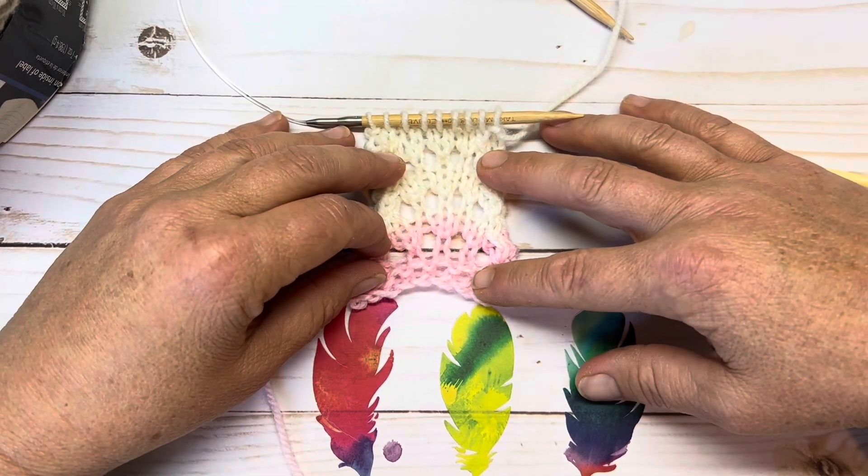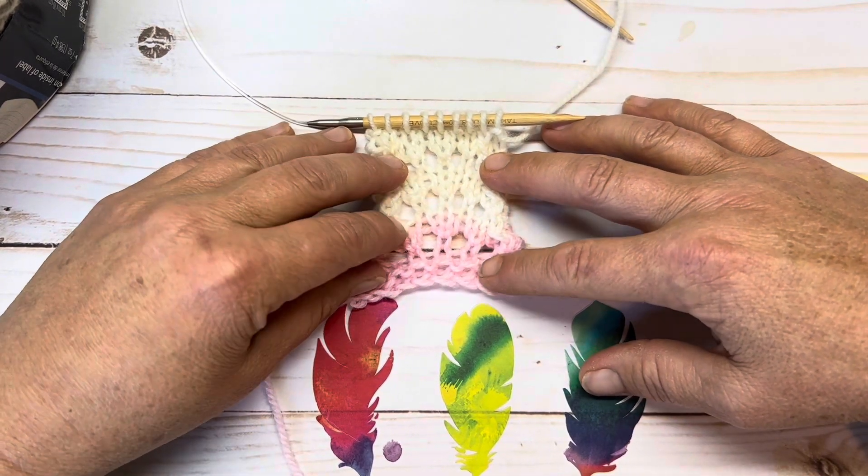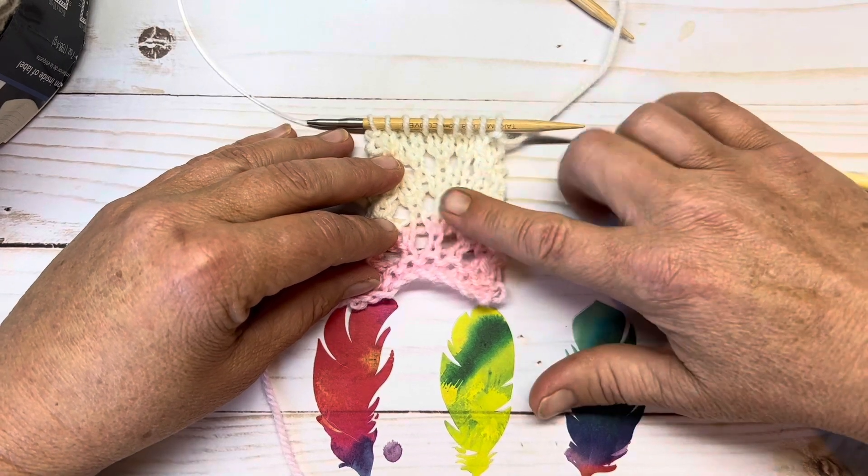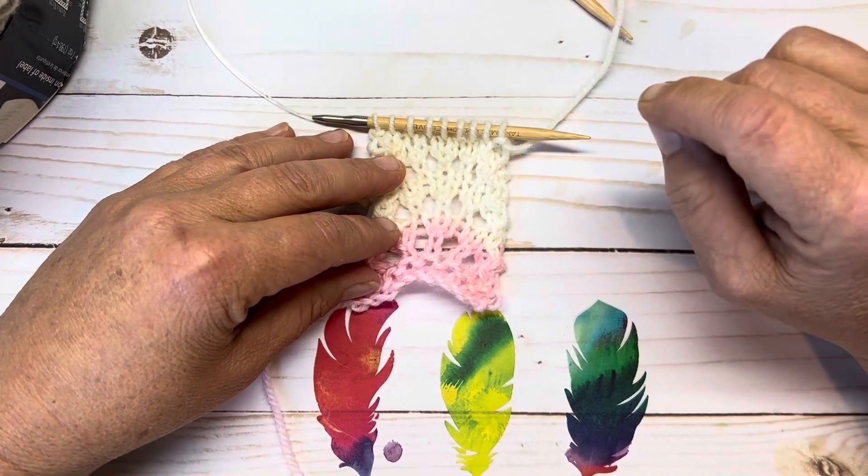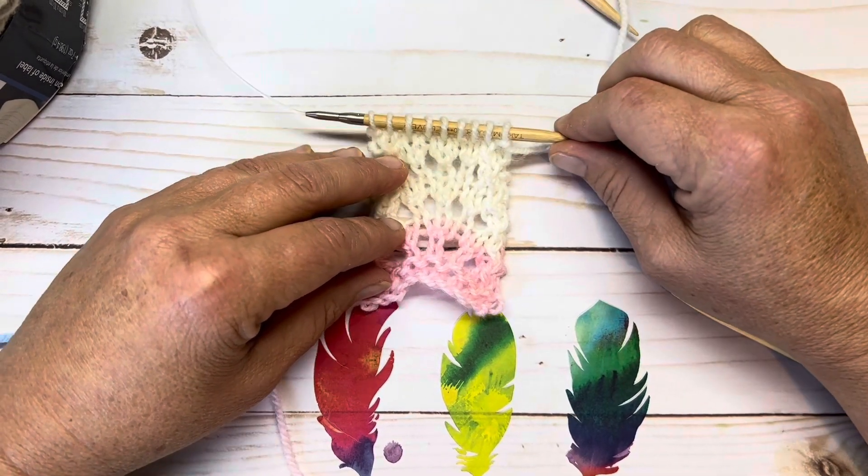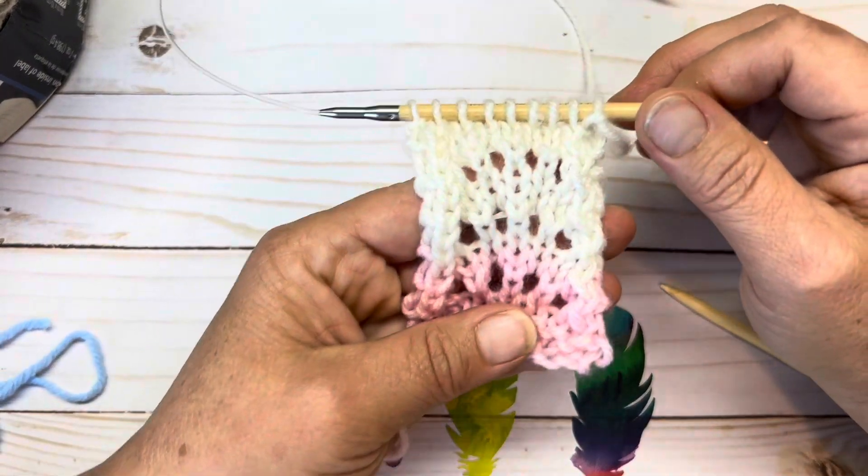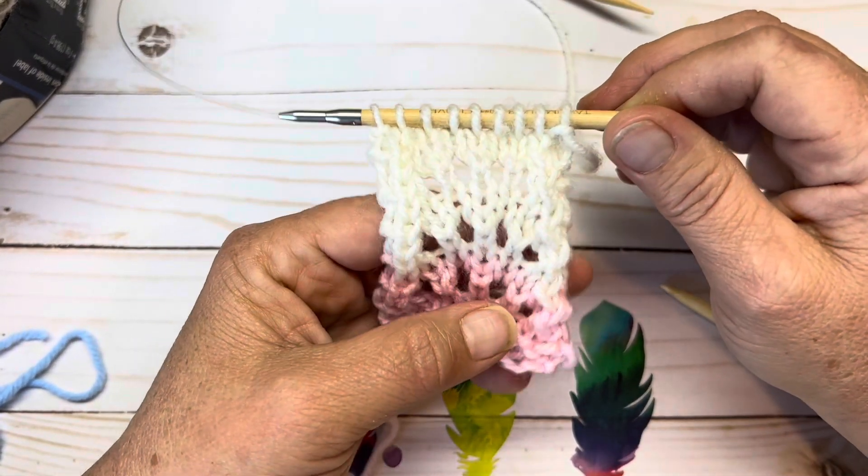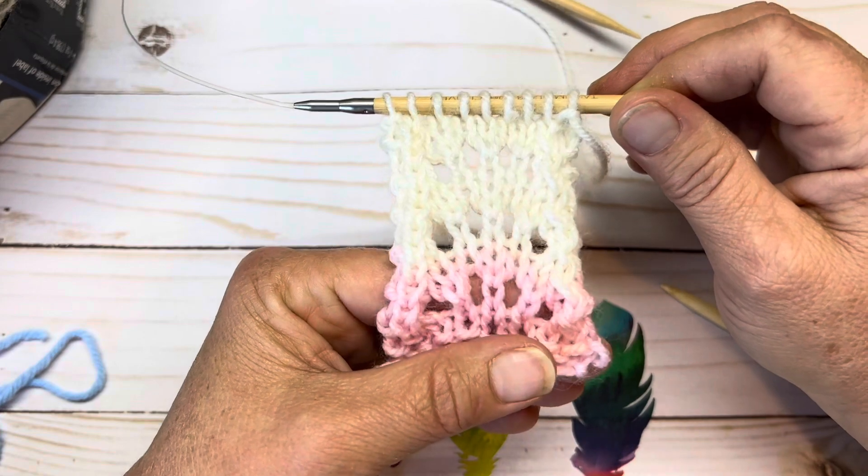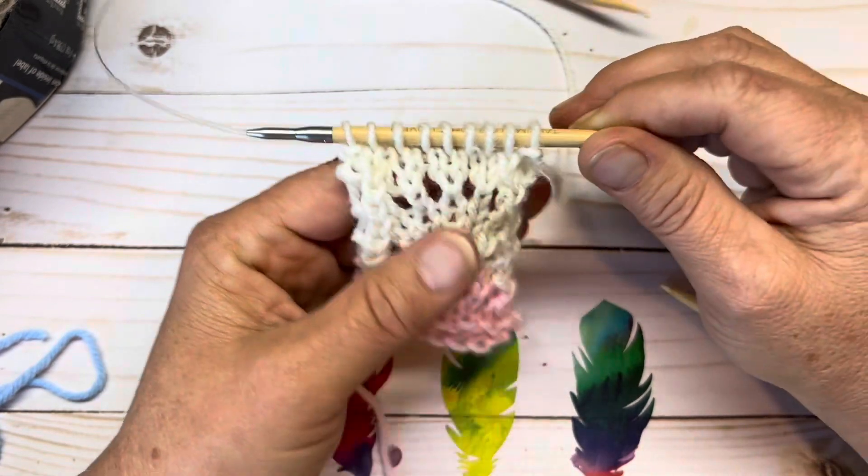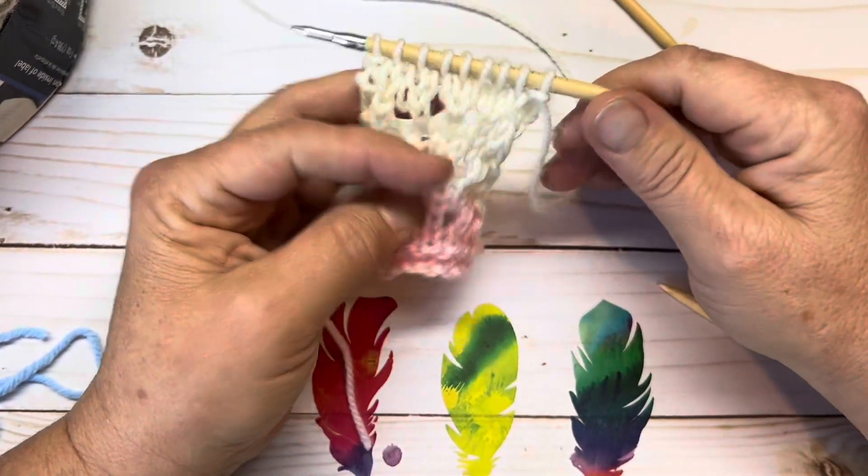Today we're going to do a knitting stitch pattern tutorial. For this particular swatch I used a DK weight yarn, but as you can see there's lots of pretty eyelets in it and these can be worked up in panels.